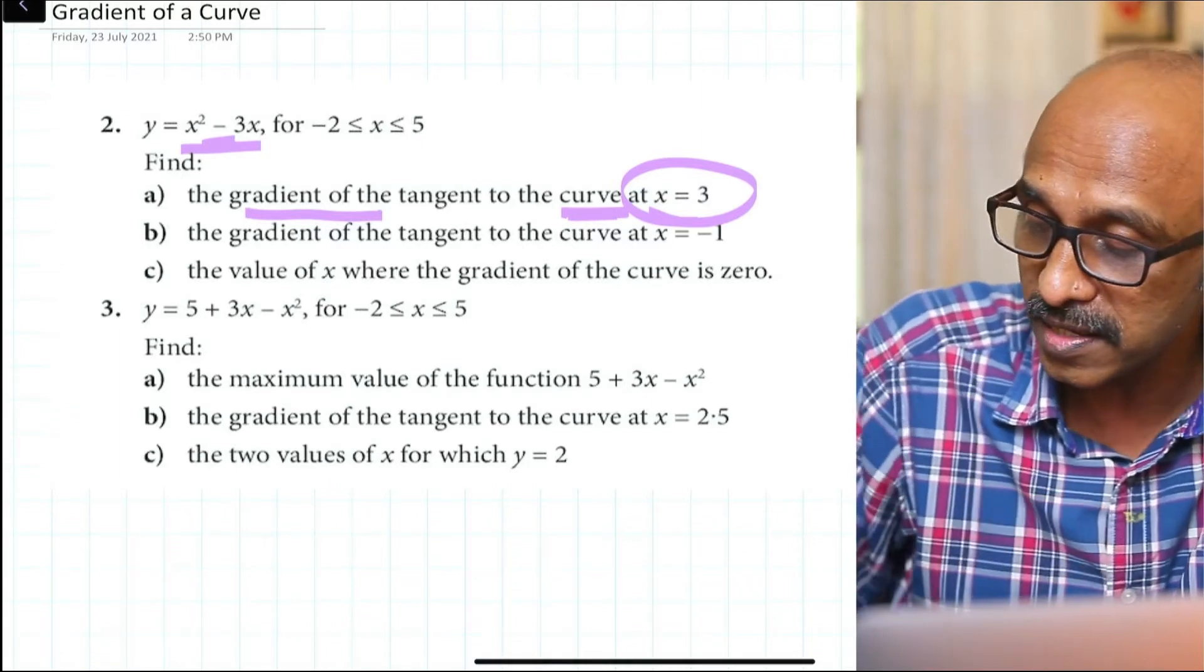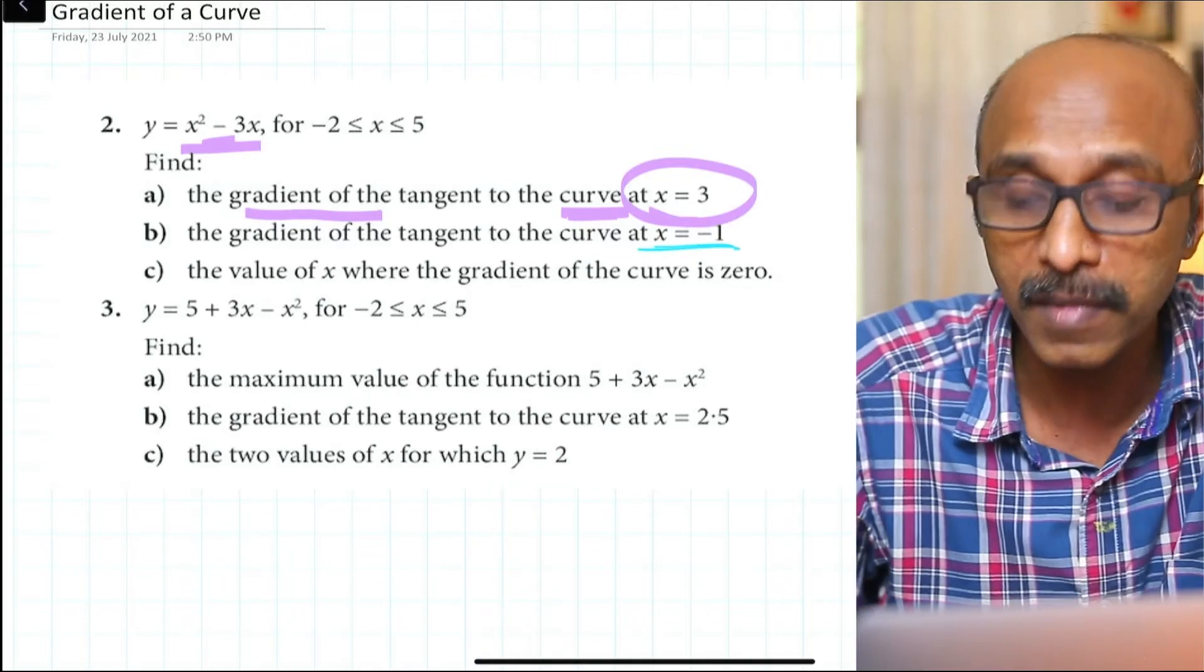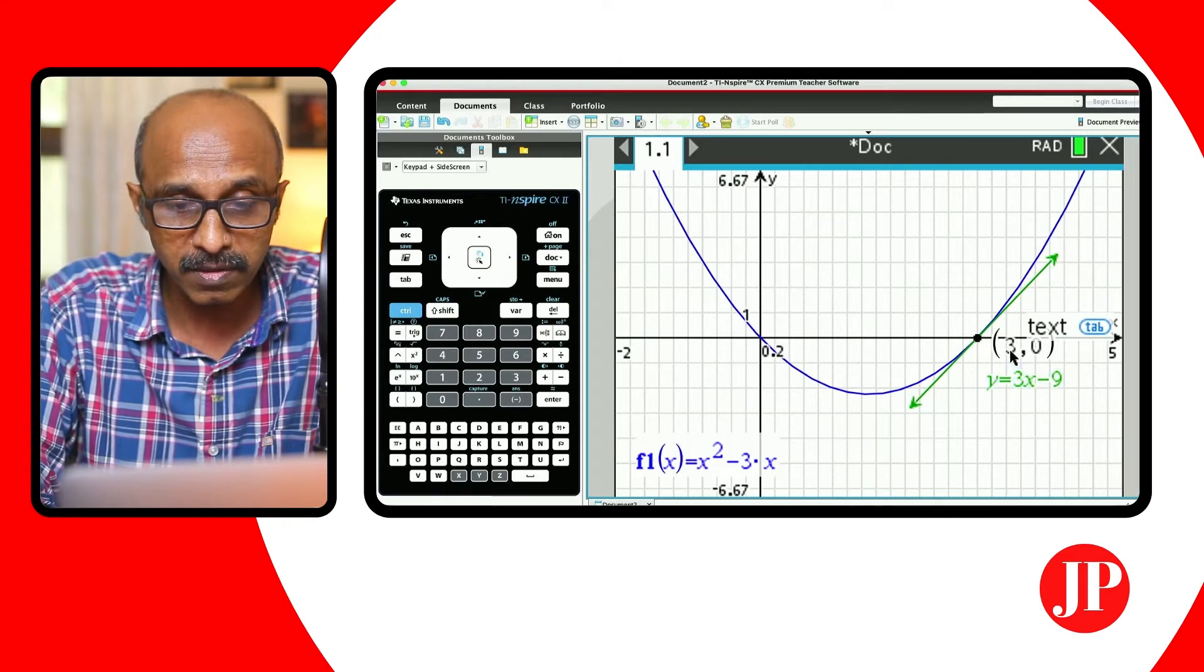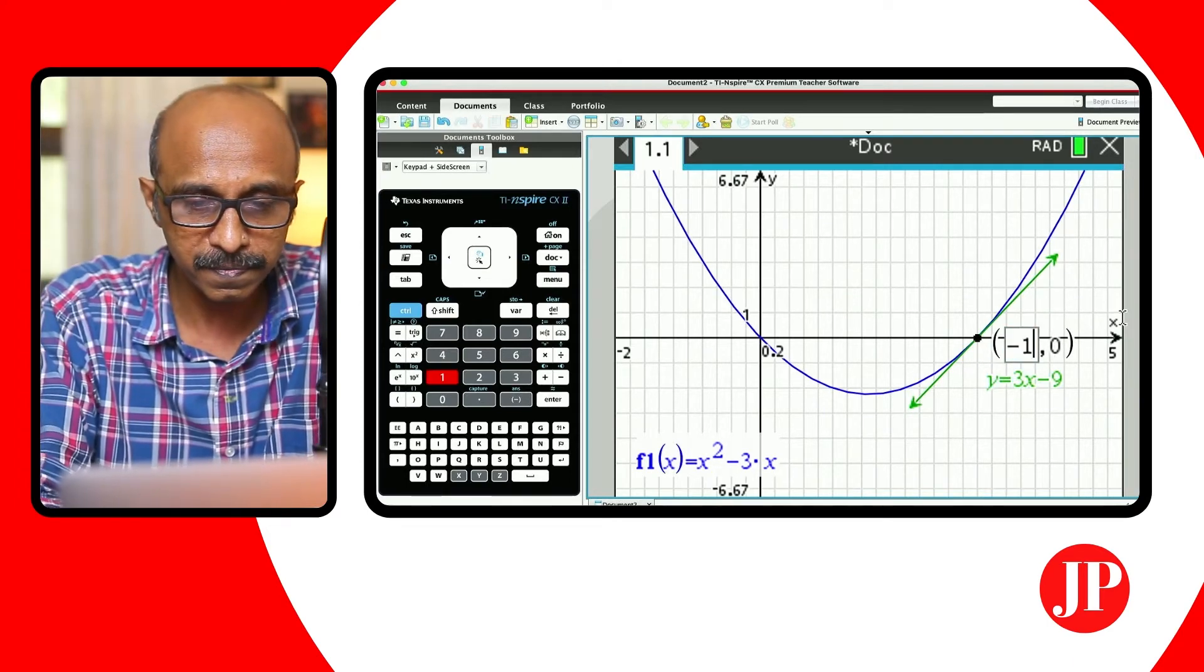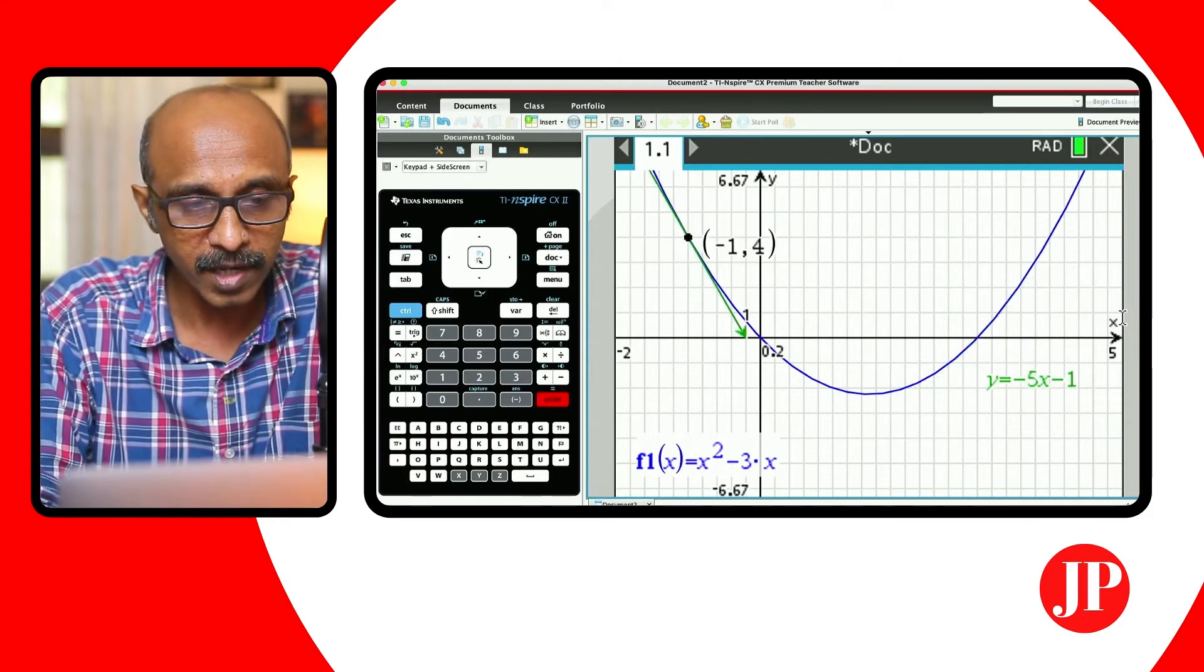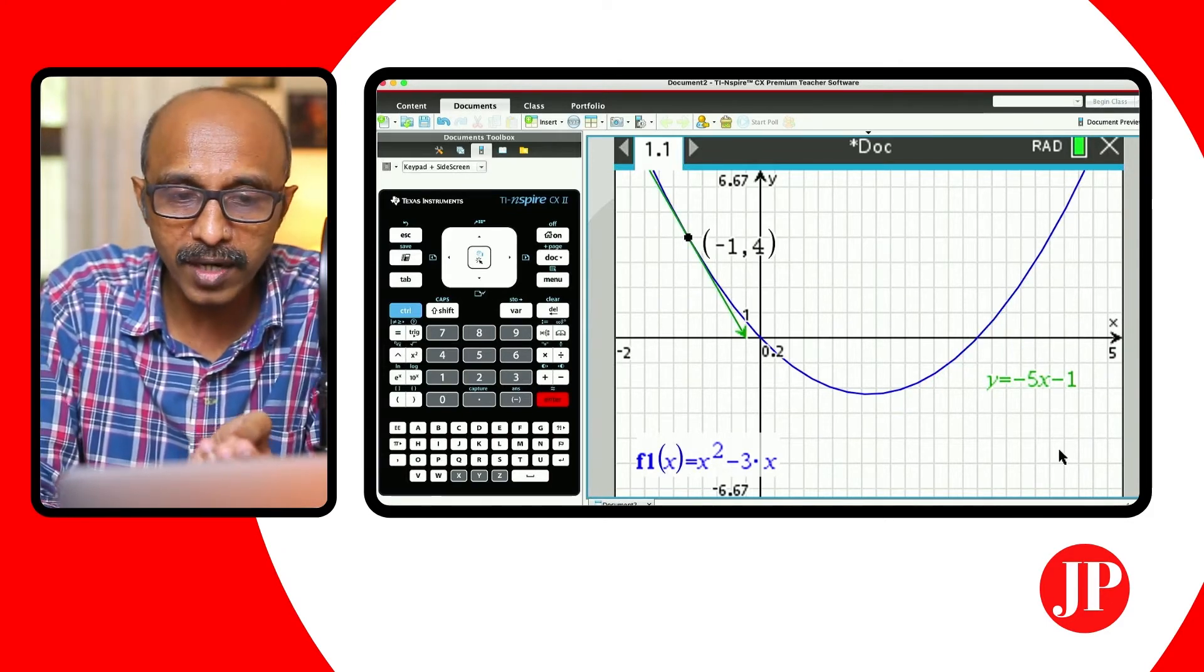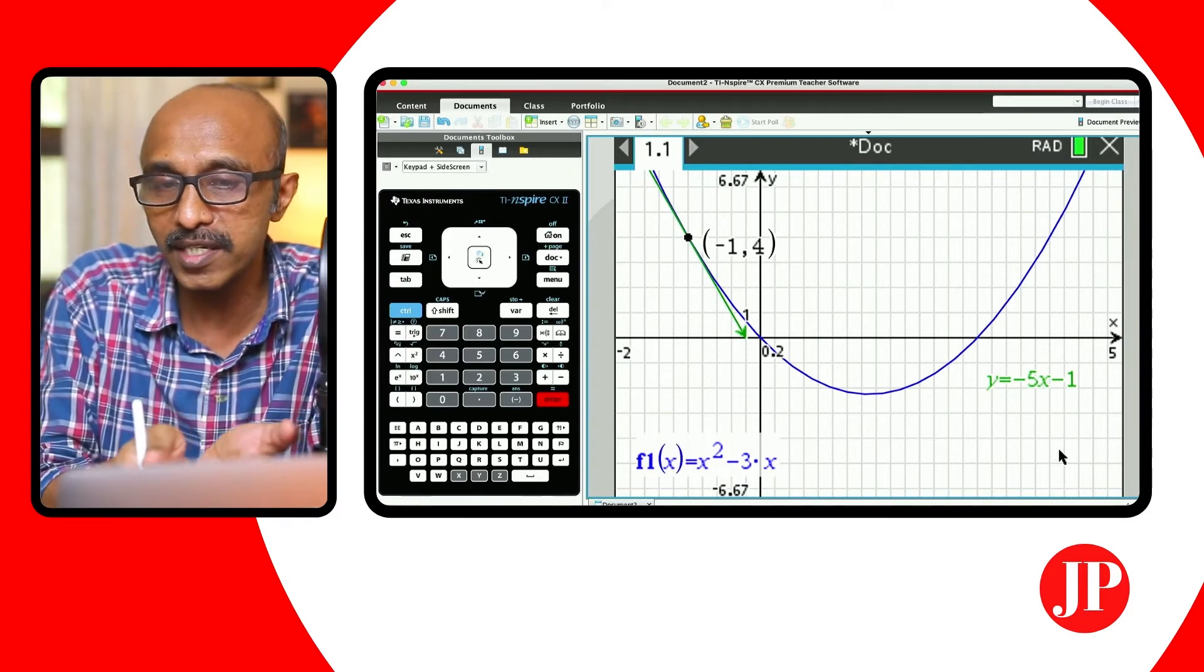But the cool part of this technique is that the second part of the question says find the gradient of the tangent at x equals negative 1. Watch what can be done. You've got the tangent there. And all that you can do is I just click that x value on the point. There you go. And I just make it negative 1. Watch. I've got the tangent there. So just by changing the x value on the point on, I've got the new tangent with the new equation of the tangent and the gradient of the new tangent is negative 5.